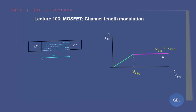Now, what is channel length modulation? In JFET, the output characteristics curve had a pinch-off voltage at a specific VDS value. But here in MOSFET, we are going to call it the effective voltage. When VDS is greater than the effective voltage, you get a constant current value.